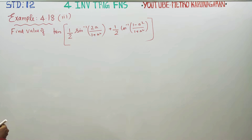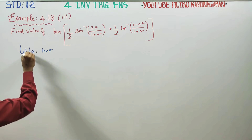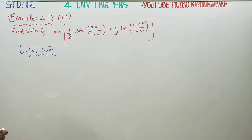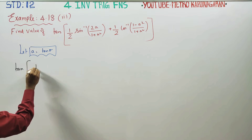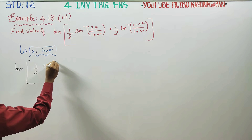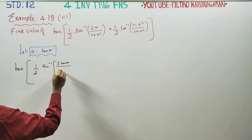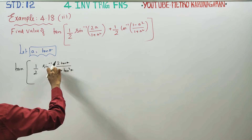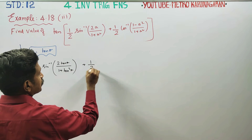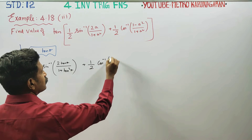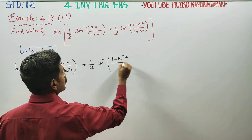Let a equal to tan θ. Substitute the value: tan of 1/2 sin inverse of 2tan θ / (1 + tan²θ), plus 1/2 cos inverse of (1 - tan²θ) / (1 + tan²θ).